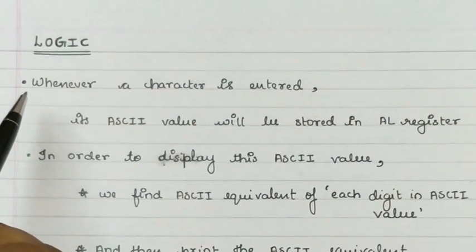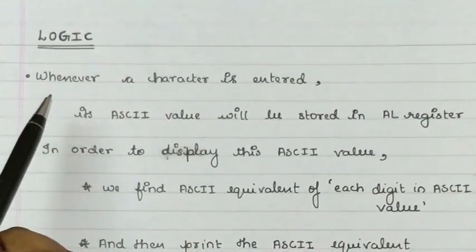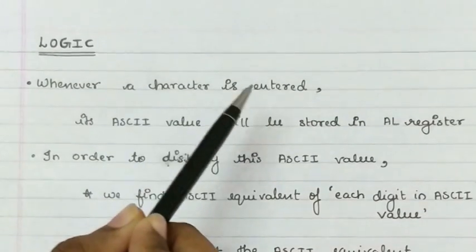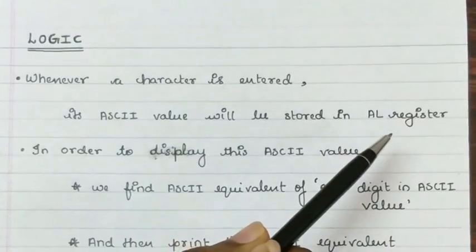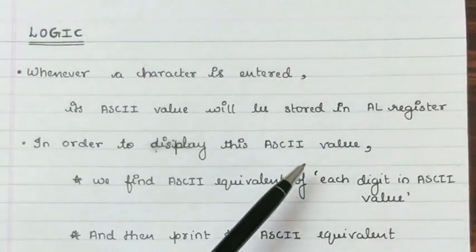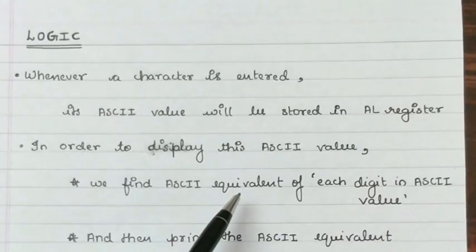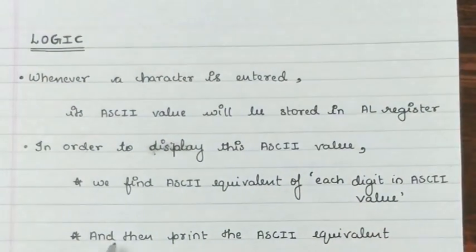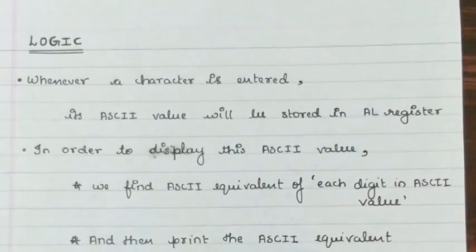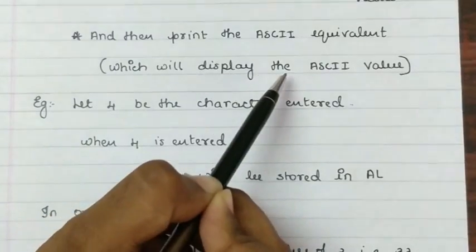Before going into the code, let us discuss the logic behind it. Whenever a character is entered, its ASCII value will be stored in al register. In order to display this ASCII value, we find ASCII equivalent of each digit in ASCII value and then print the ASCII equivalent which will display the ASCII value.